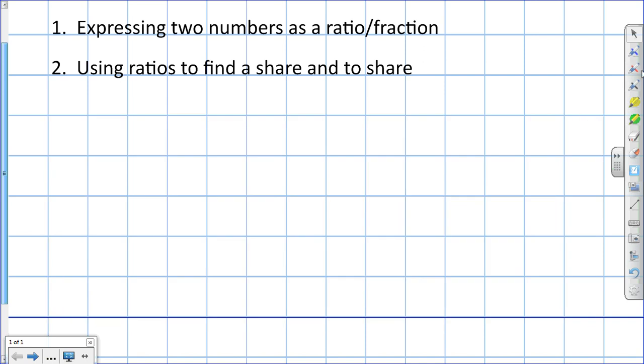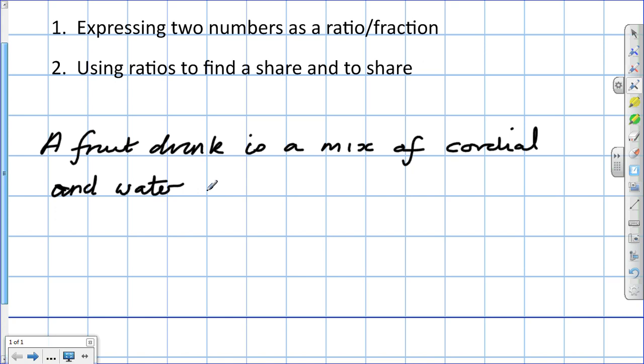A fruit drink is a mix of cordial and water in the ratio 2 to 11. How much cordial to make 390 milliliters of drink?